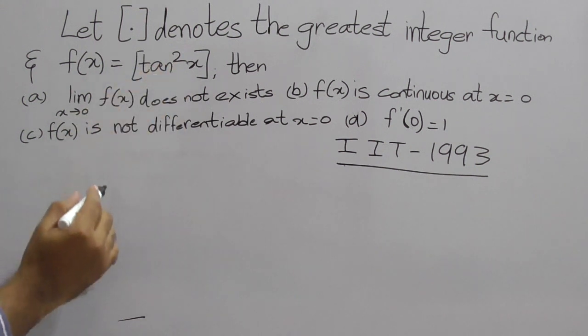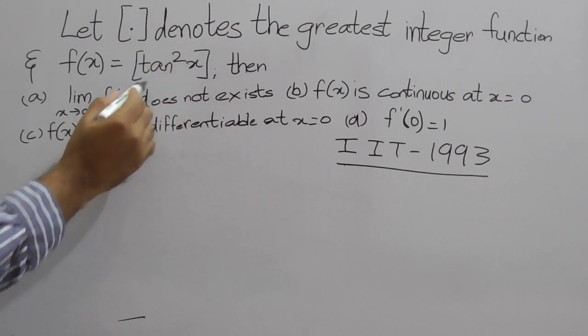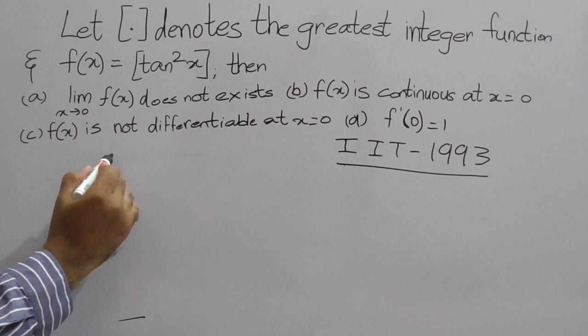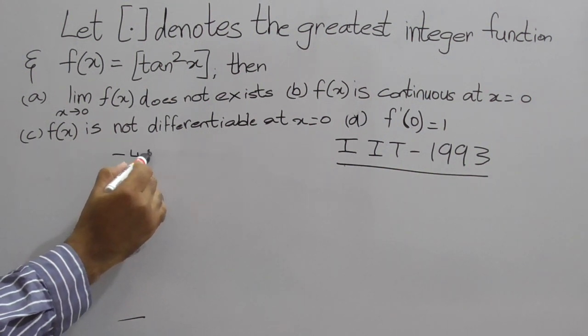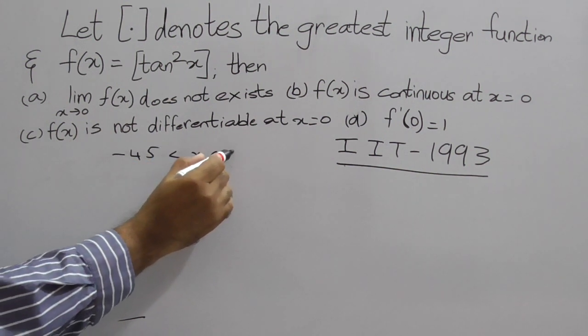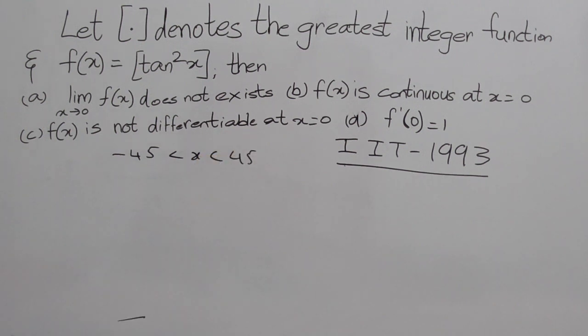For [tan²x], the greatest integer function gives only integer values. Therefore, here -45° < x < 45°. That is, x lies between -45° to 45°. Why? Because tan 45° is 1.